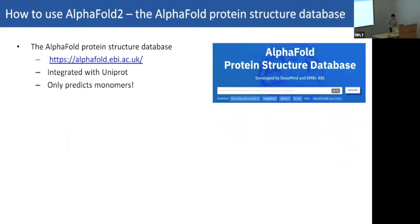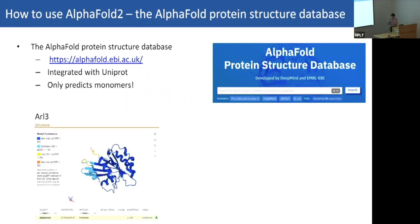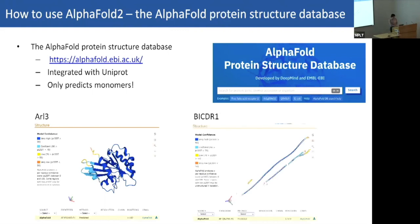The AlphaFold protein structure database has the complete proteins of 20 organisms predicted using AlphaFold in one place, with UniProt integration. There are plans to predict every single protein in UniProt — watch this space. However, it currently only predicts monomers. This works really well for monomeric proteins like this RAD-related GTPase, colored by PLDDT. But for proteins known to be dimers — like BICDR1, which forms a dimeric coiled-coil — it will still predict it as a monomer, which is problematic. You need prior knowledge of whether your protein is a monomer before taking these as gospel.